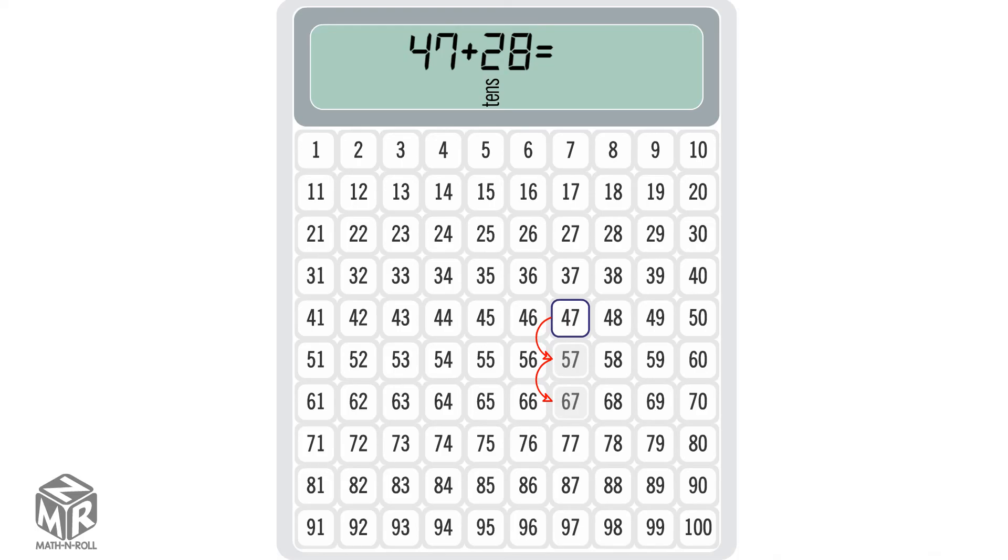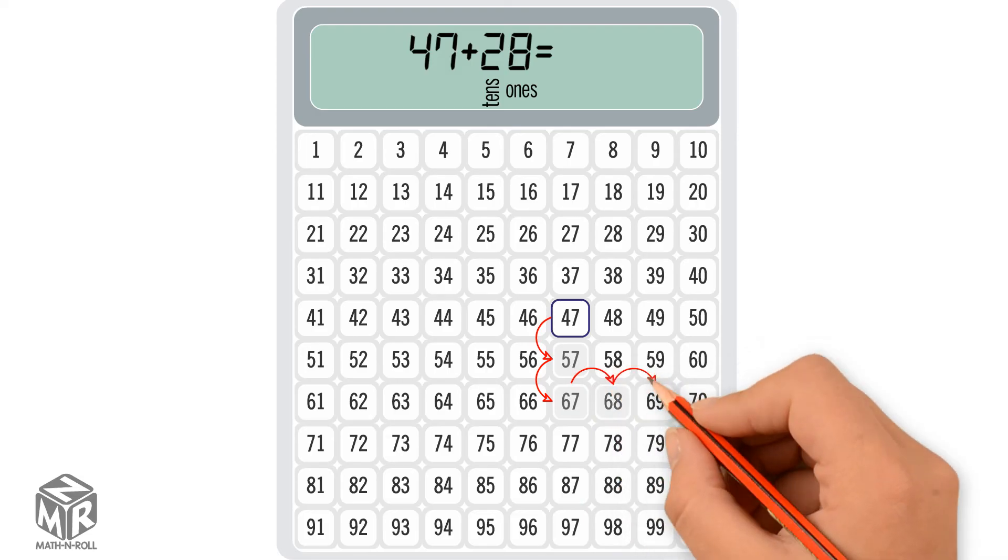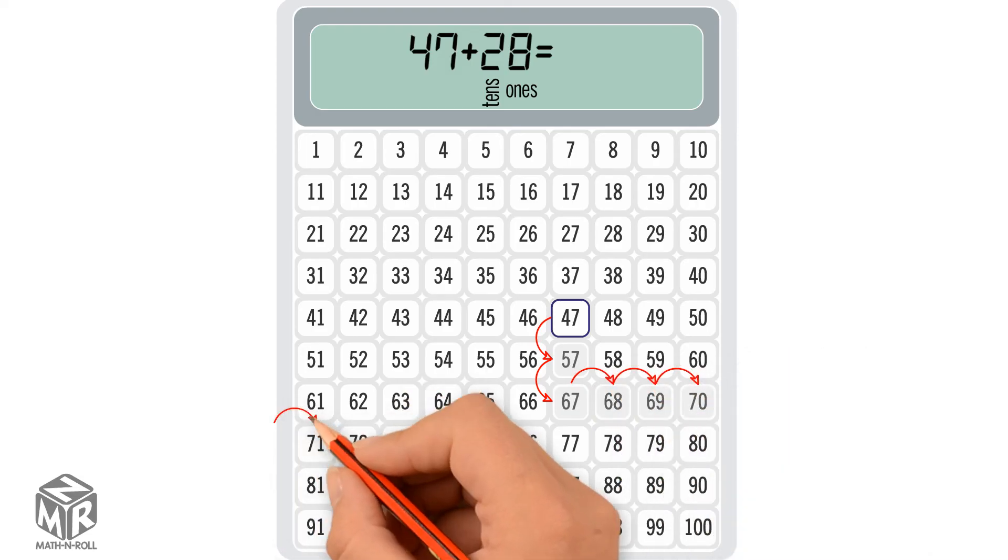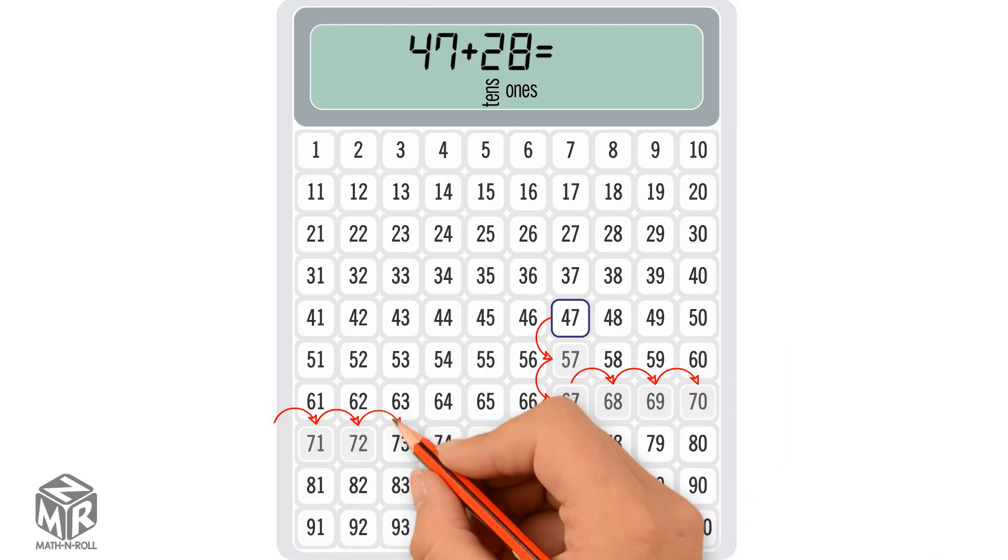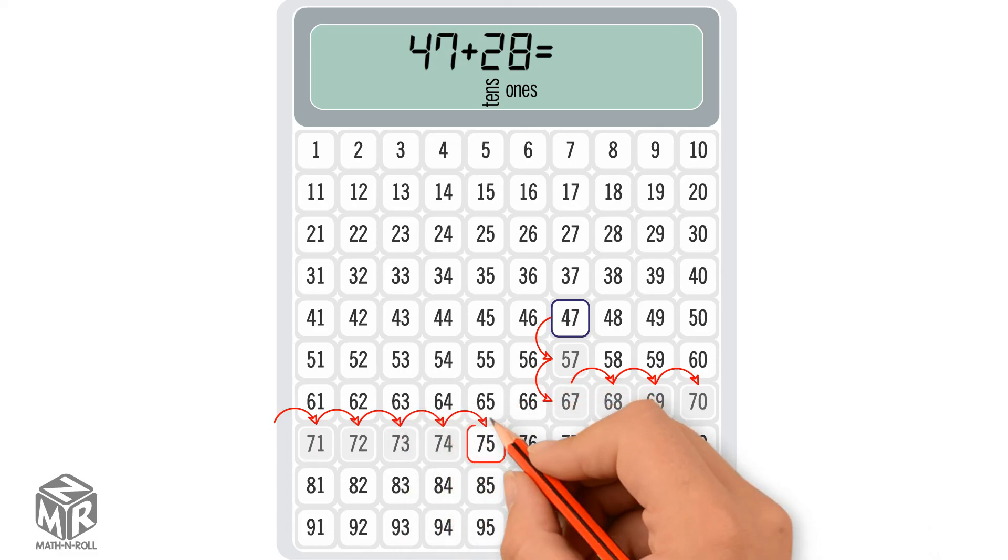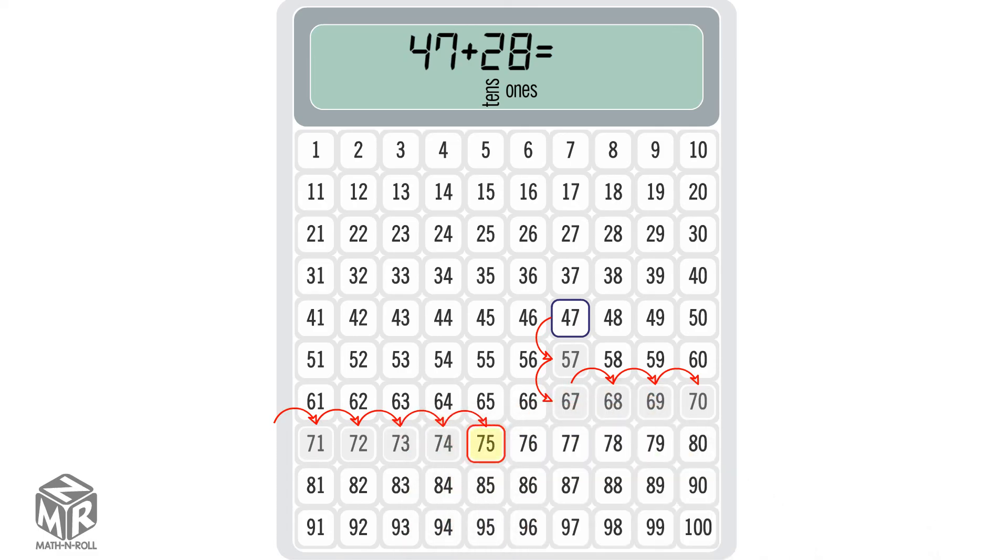28 has 8 ones, so we continue at 67 and count 8 to the next row. We get 75, so 47 plus 28 equals 75.